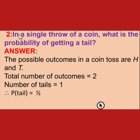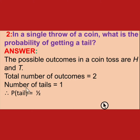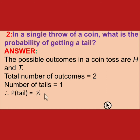Second: in a single coin toss, what is the probability of getting a tail? In a single coin toss, all possible outcomes are head and tail, so total number of outcomes are 2. The tail occurs only 1 time, so number of favorable outcomes is 1. Probability of getting a tail is 1 upon 2.